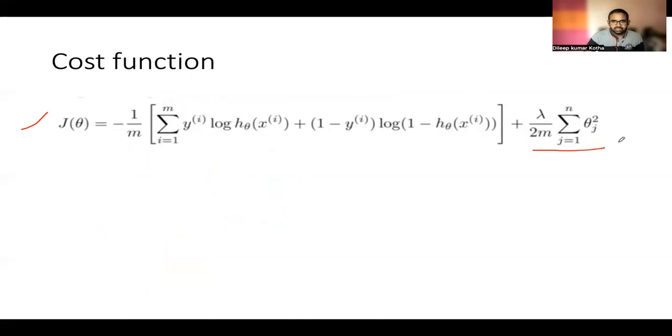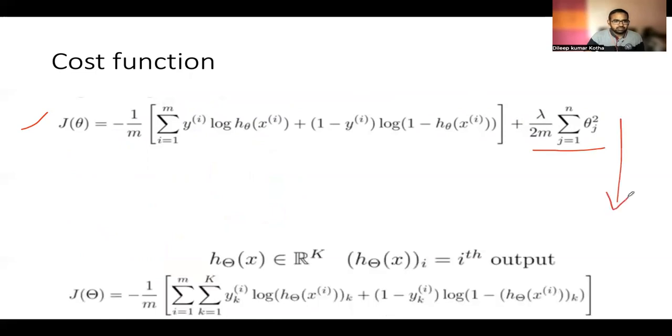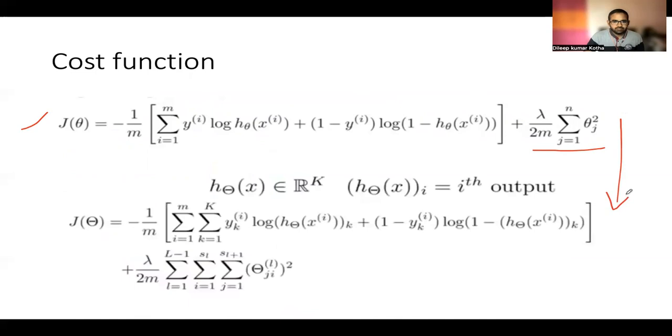Now, generalizing this for neural networks will look like this. Where since we have multiple hypotheses depending on each class for a multiclass classification problem.